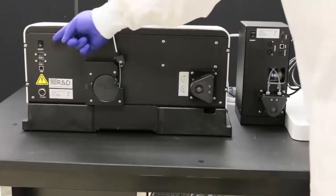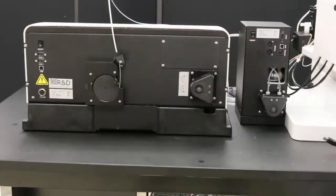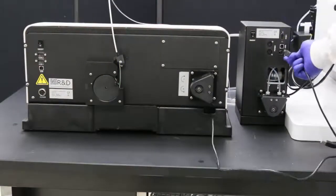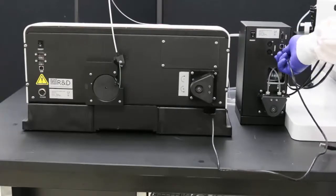Make sure the power switches on the back of the SDX and on the back of the auto sampler are turned off. Connect the vortex cable to the vortex connector on the back of the SDX pump module.